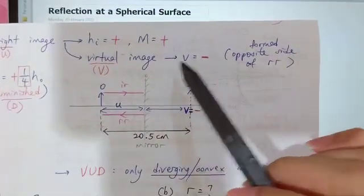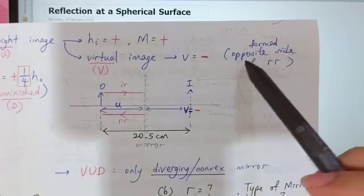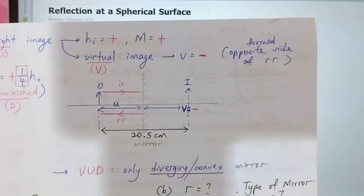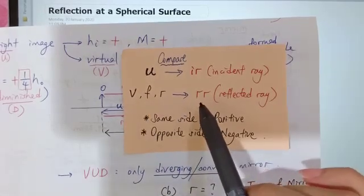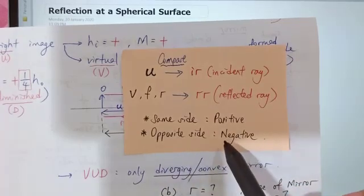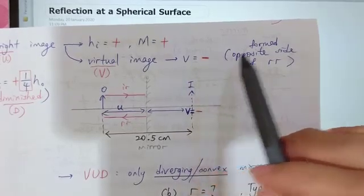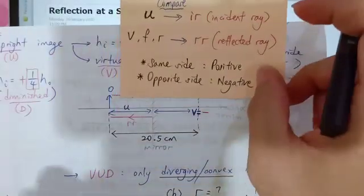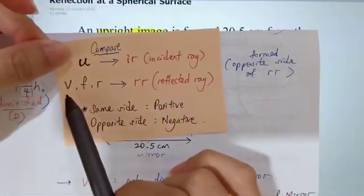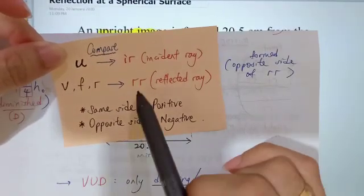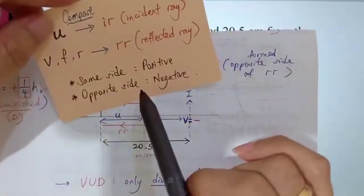And also, we know that V is negative, meaning that this image must form at the opposite side of the refracted ray. Because our image is always compared with the refracted ray — same side is positive, opposite side is negative. So since V is negative, our image is formed on the opposite side of the refracted ray.